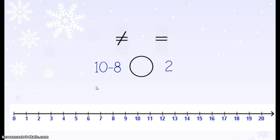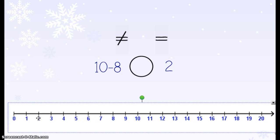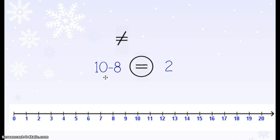To use my number line, I'm going to do 10 minus 8 first. I'm going to start with 10 on my number line and do 8 hops back. Count with me: 1, 2, 3, 4, 5, 6, 7, 8. I landed at the number 2. So if I have 10 and I take away 8, I have 2. 2 is the same as 2 — that means they're equal. 10 minus 8 equals 2.